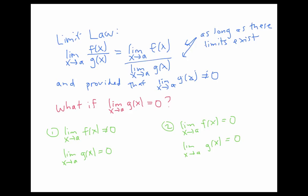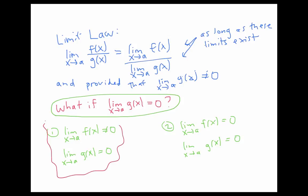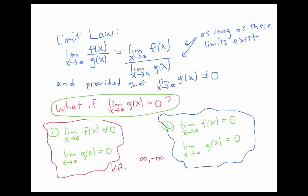So in this video, we've looked at the limits of quotients when the limit of the denominator is zero. We did examples when the limit of the numerator was not zero but the limit of the denominator was zero, and we saw that these corresponded to vertical asymptotes, giving us a limit of infinity, negative infinity, or sometimes infinity on one side and negative infinity on the other. We also hinted at things to come when both the numerator and denominator are heading towards zero and anything can happen.